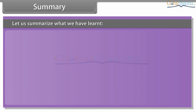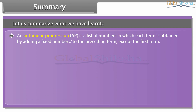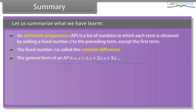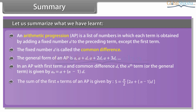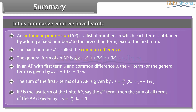Let us summarize what we have learned. An arithmetic progression (AP) is a list of numbers in which each term is obtained by adding a fixed number d to the preceding term, except the first term. The fixed number d is called the common difference. The general form of an AP is: a, a+d, a+2d, a+3d, and so on. The Nth term is AN = A + (N−1)×d. The sum of the first N terms is S = N/2 × [2A + (N−1)d]. If L is the last term, then S = N/2 × (A + L).